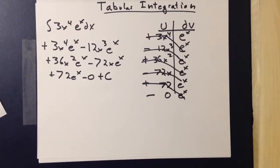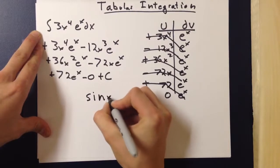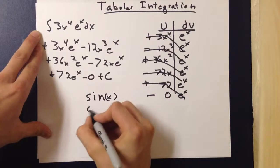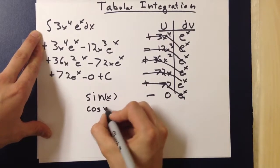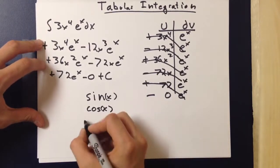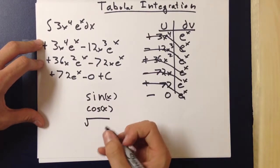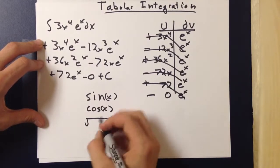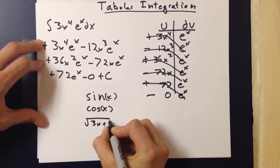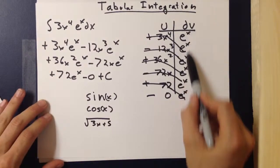E to the x is not the only candidate for this. There are also various other non-repeating functions, such as sine of x or cosine of x. There are also others such as square roots, cube roots, or fourth roots, if you ever encounter those. All of these can be used in dv.